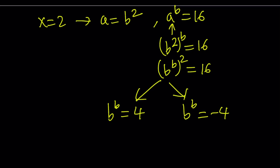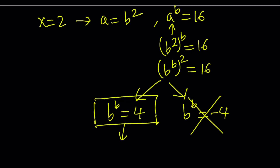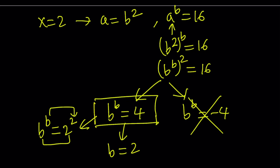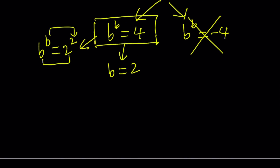Obviously, b to the power b equals negative 4 has no real solutions. Now, b to the power b equals negative 4 has no solutions because we're looking for real solutions — though it's worth asking whether there are complex solutions. We're not going to accept it since b would not be real. From b to the power b equals 4, we can write 4 as 2 to the second power, and by comparing bases and exponents, we conclude that b equals 2 is the only solution.